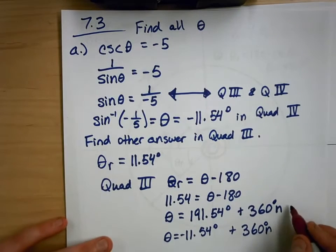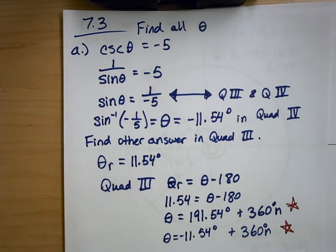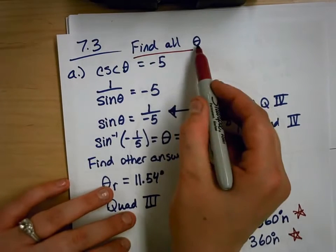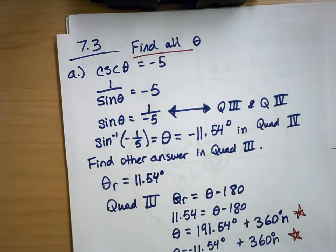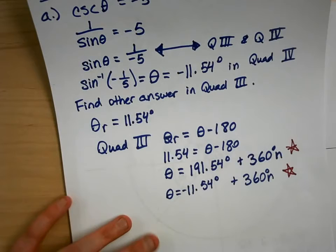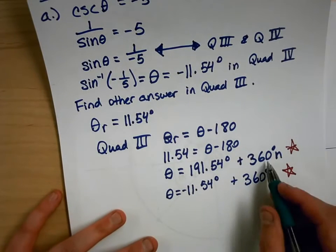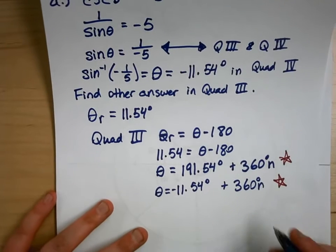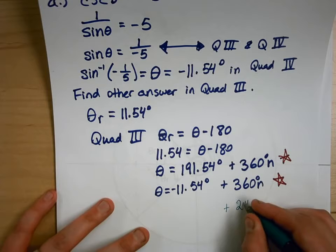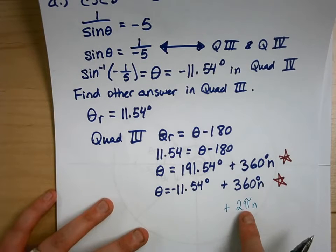Make sure to tag 360°n onto your answers if it says 'find all theta' and doesn't give restrictions between 0 and 360. If your answers are in radians, you would tag on 2πn instead, since 2π is all the way around the circle.